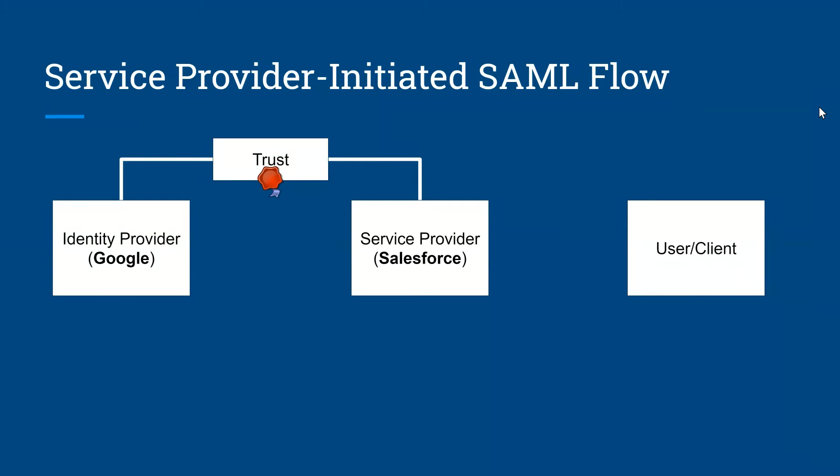In the service provider initiated SAML flow, we have the same components. The first is the user. The second is the service provider, which in our case is Salesforce. The third component is the identity provider, which in our case, as an example, is Google, whose responsibility is to authenticate the user. The fourth is trust, which is between the identity provider and the service provider.